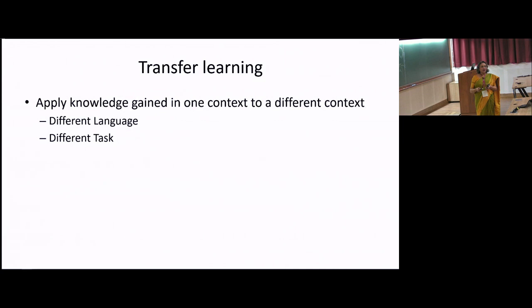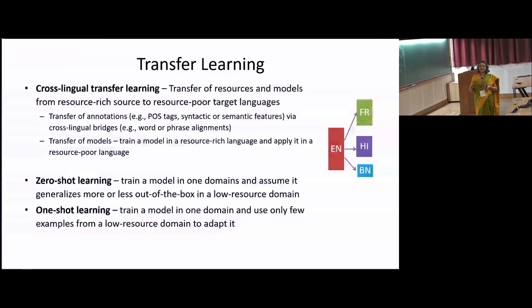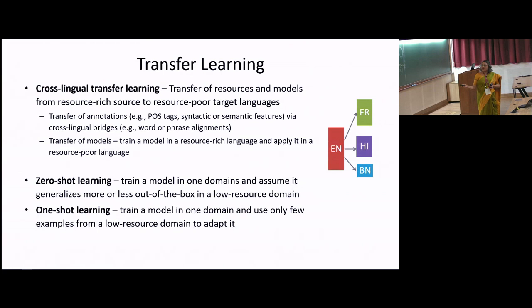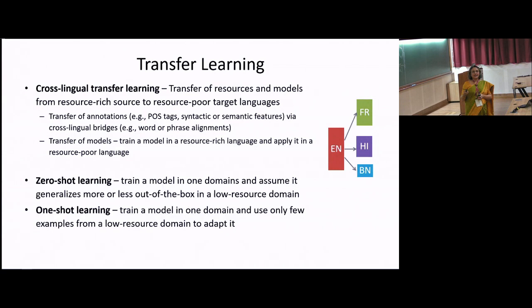Transfer learning is applying knowledge gained in one context to a different context — in our case, different languages or different tasks. Suppose you learn a model on English and use this model, either without any change or with some changes, on different other languages. Cross-lingual transfer learning transfers either models or resources. You can take labeled or unlabeled data created in one language and transfer it by some process to another language, so you can quickly develop labeled data in the target language to build your models. Or you can learn a model in the source language and apply it directly on the target language.